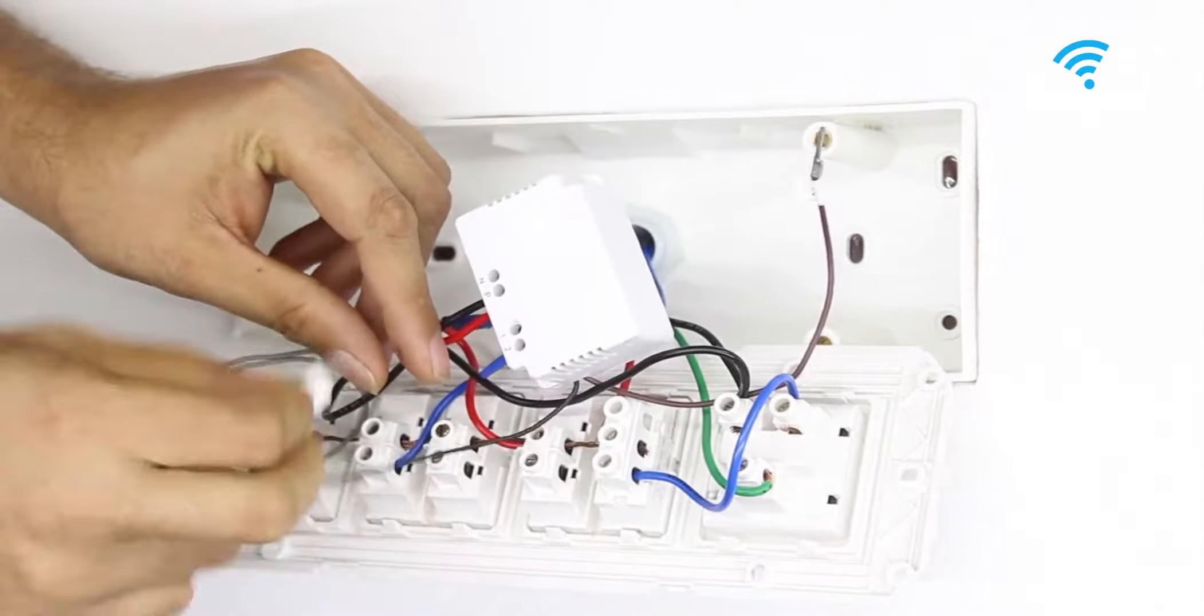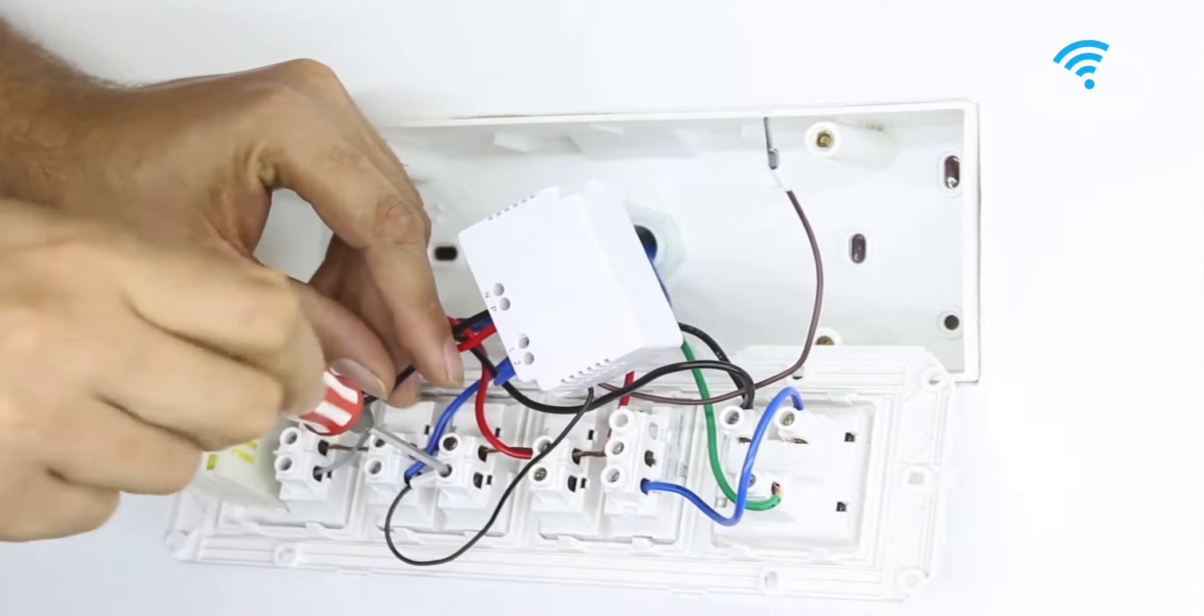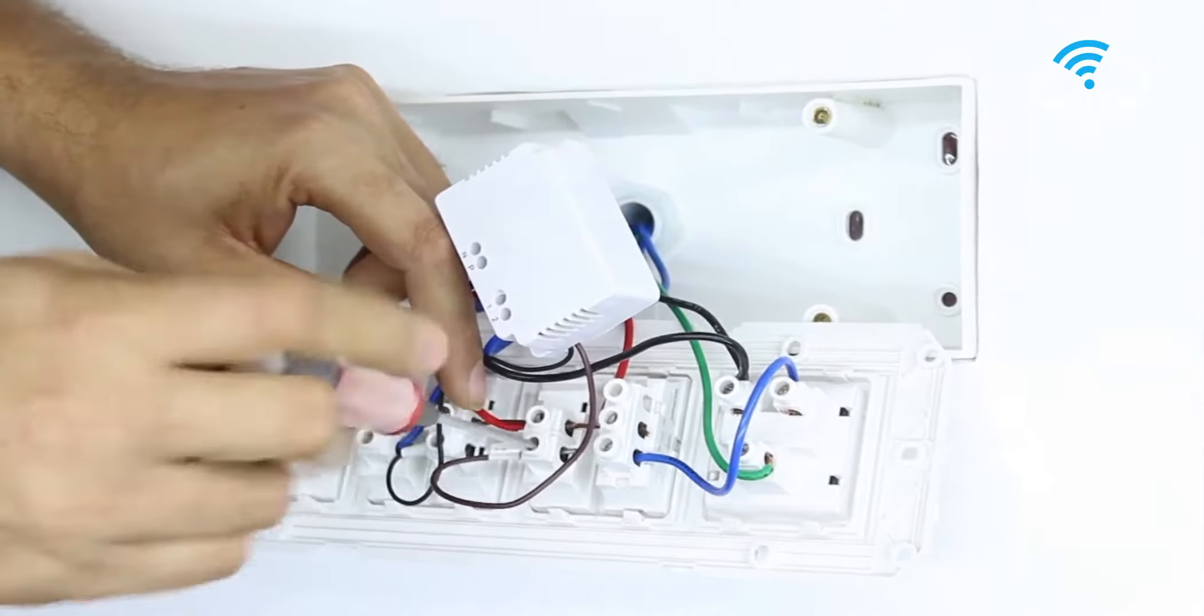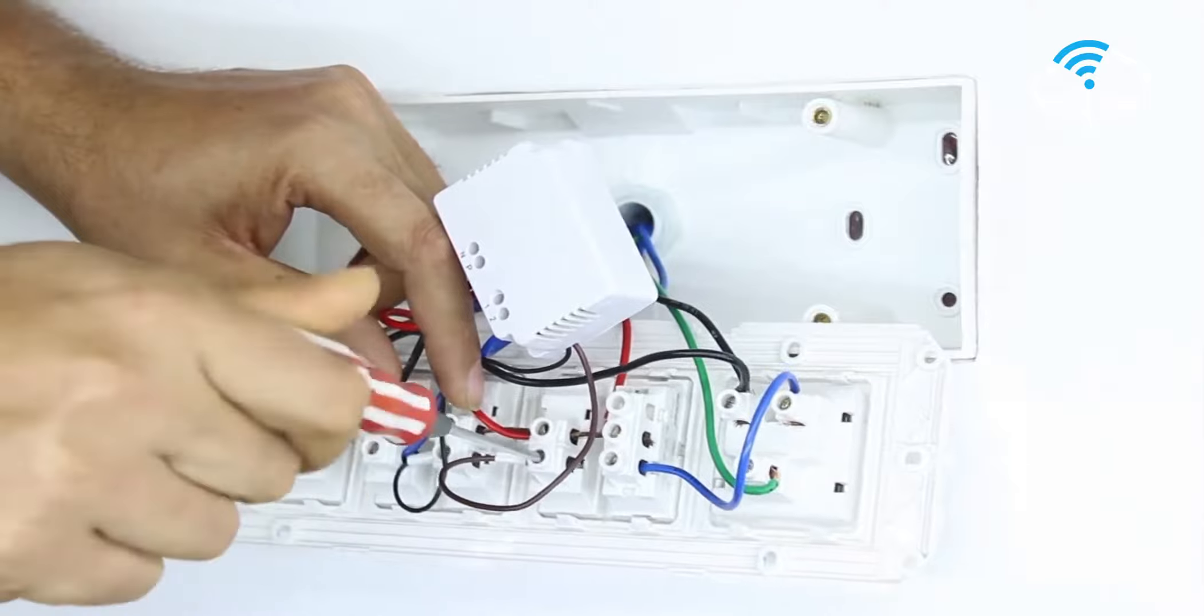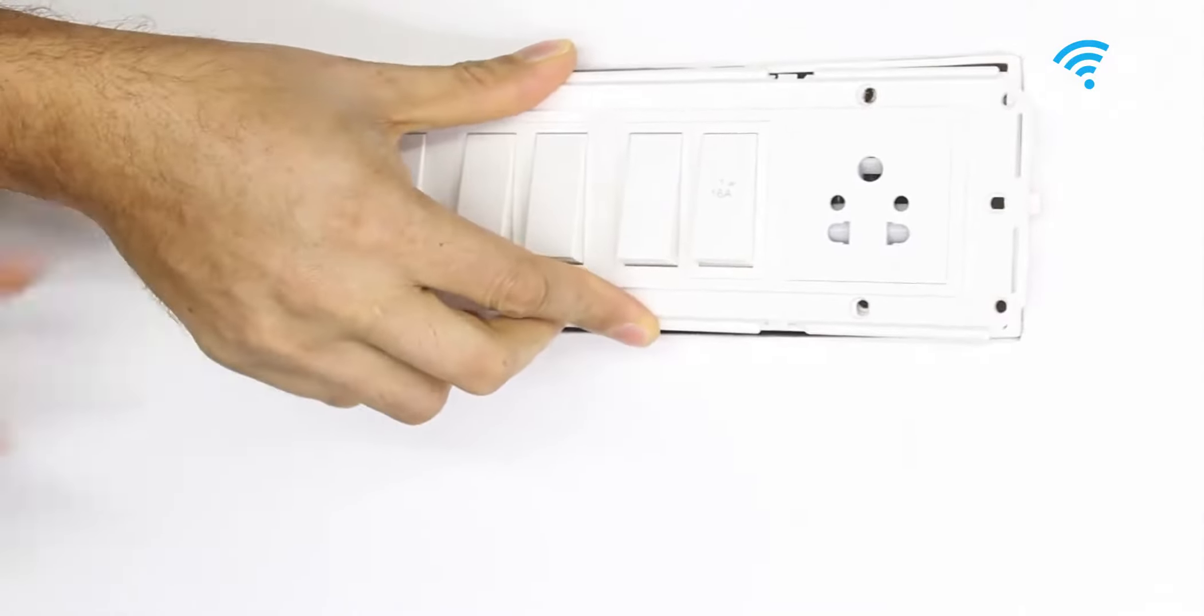Take the virtual wires 1 and 2 of the device and connect them to the load pin of the respective appliance switch. Once you are done connecting all the wires, insert the Two Node Switch inside the switchboard and reattach its wall plate firmly back onto the wall.